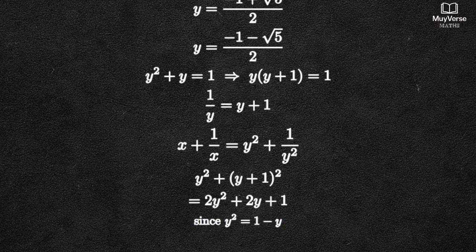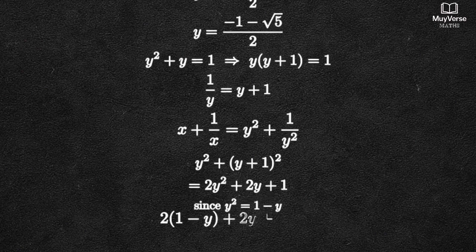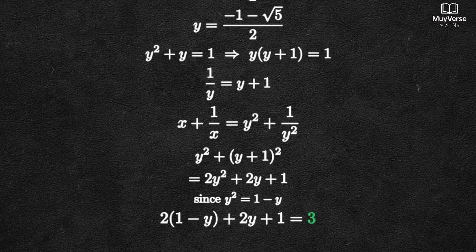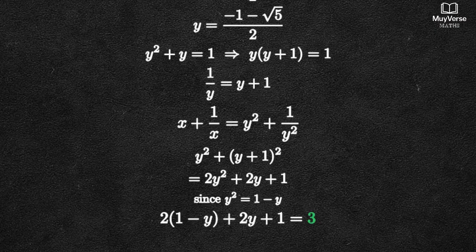But from the original relation, y squared equals 1 minus y. Substitute that: we get 2 times quantity 1 minus y plus 2y plus 1, which simplifies to 3. So x plus 1 over x equals 3.